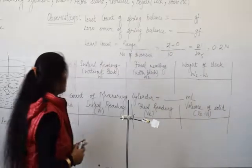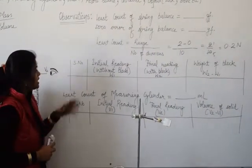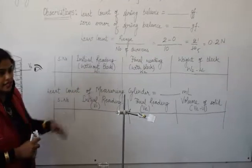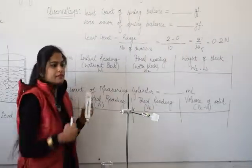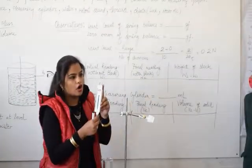This side it is in gram also. Then observation table you can see. Serial number initial reading. First of all we will see initial reading. It is at zero. Initial reading will be zero.